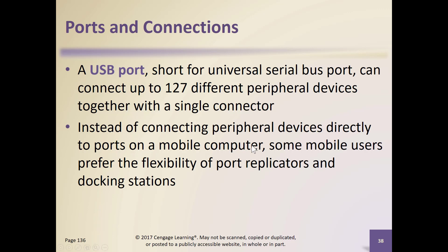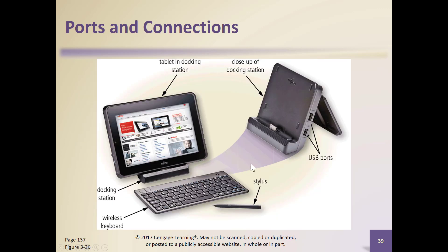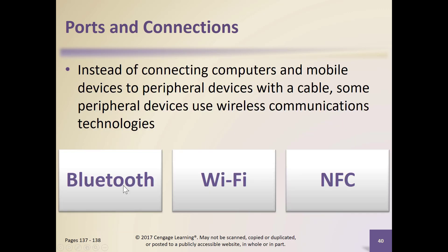Some mobile users use docking stations or hubs — for example, a little docking station for a tablet with a wireless keyboard, most likely Bluetooth. Bluetooth is a wireless communication so we don't have to have physical ports. Wi-Fi we've talked about, and NFC — Near-Field Communication.